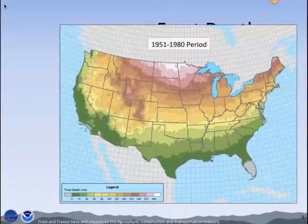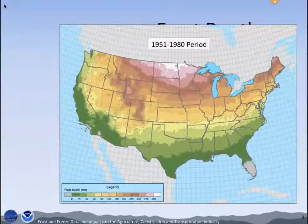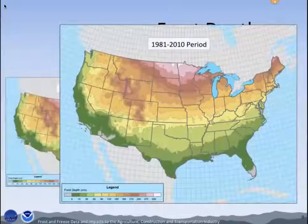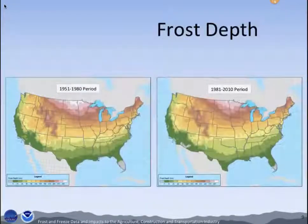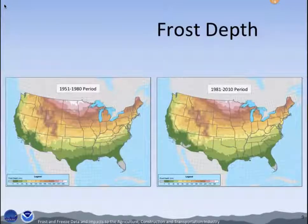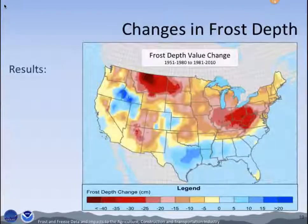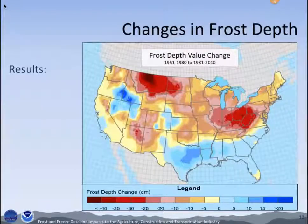Here is our 1951 to 1980 period map, and here is our 1981 to 2010 period map. I know it's a little difficult to see, but the point is to really show the comparison between the change over these two periods. This map is displaying the frost depth value change between the two periods.